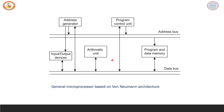Here is the general microprocessor based on the von Neumann architecture. The blocks shown are the arithmetic unit, input-output devices, and the common program and data memory which requires one address bus and one data bus. There is an address generator responsible for generating the addresses, and a program control unit which decides the sequence of execution.